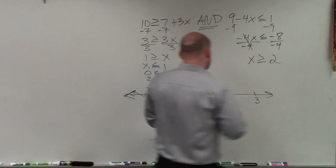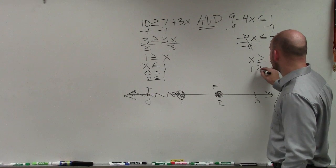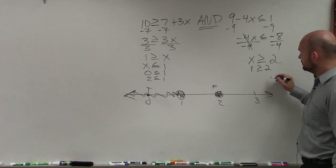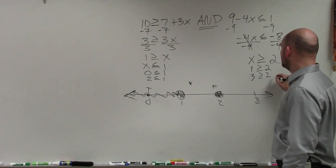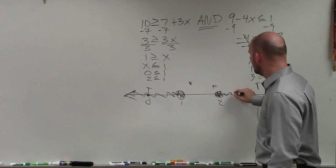Then we go to 2. Again, just plug a point to the left and to the right. 1 is less than or equal to 2. Is that true? No. That's false. Is 3 greater than or equal to 2? True. So for this one, I shade to the right.